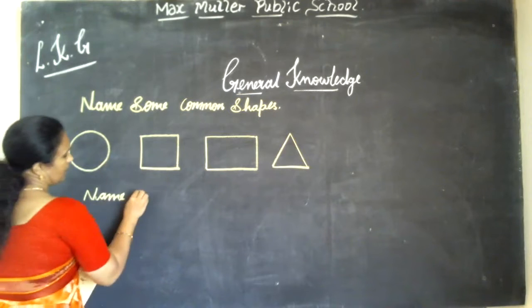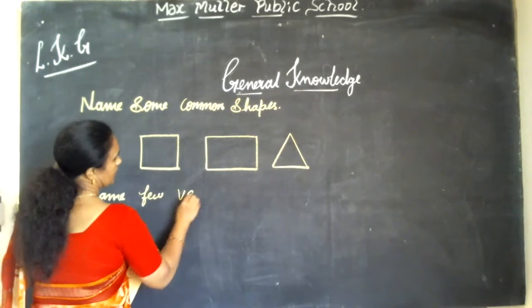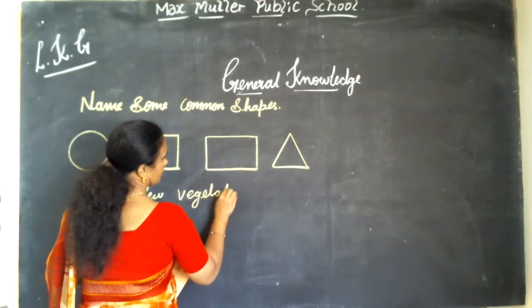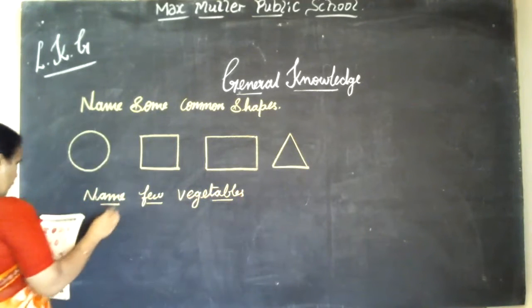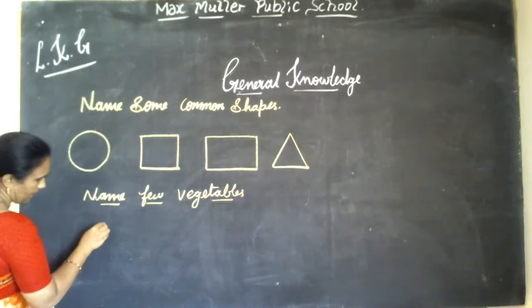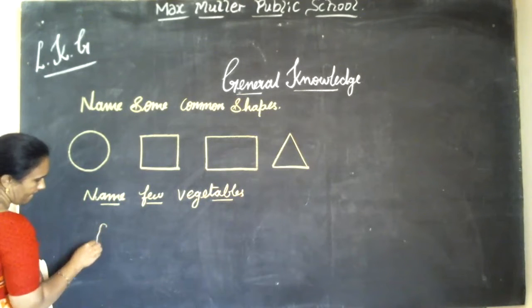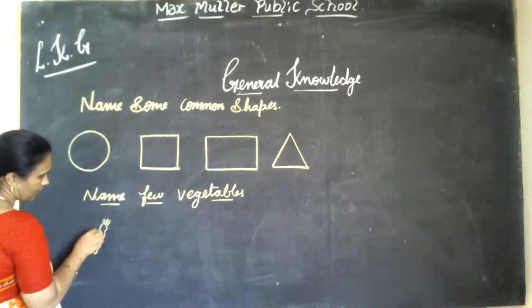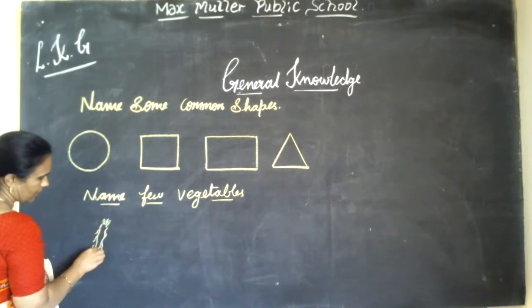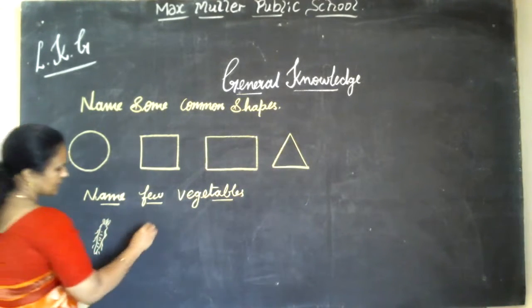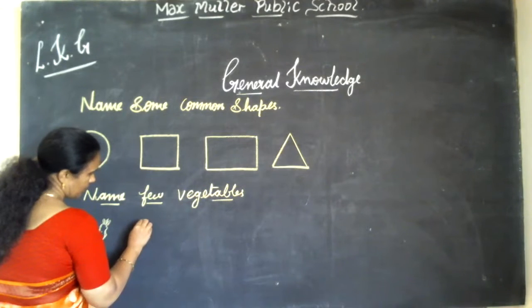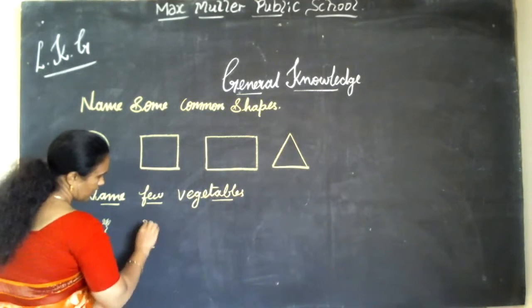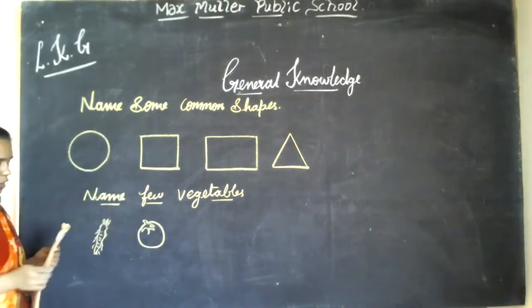Name few vegetables. Name few vegetables. Carrots. Carrots. Tomato. Carrots.